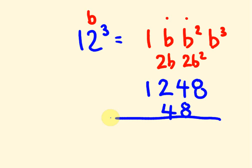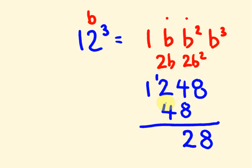And then we do a little bit of adding up. So 8 plus nothing is 8. 4 plus 2 is 12. 2 plus 4 is 6. 7 and 1. Our answer 1728. Pretty cool right?